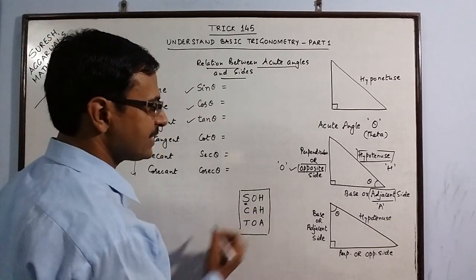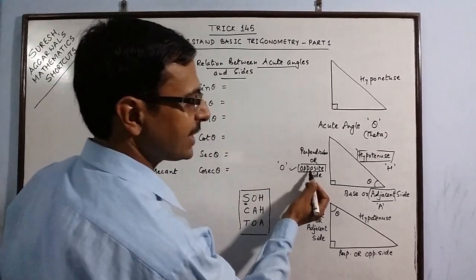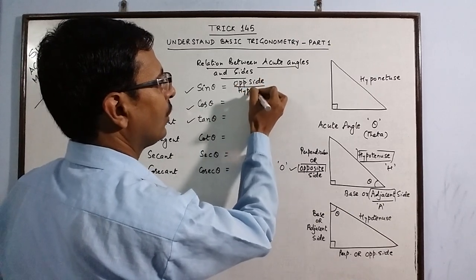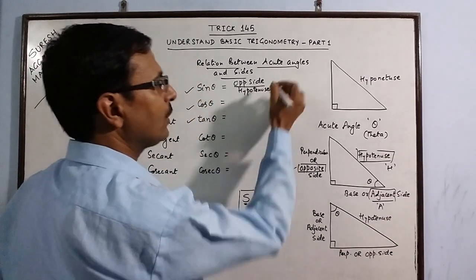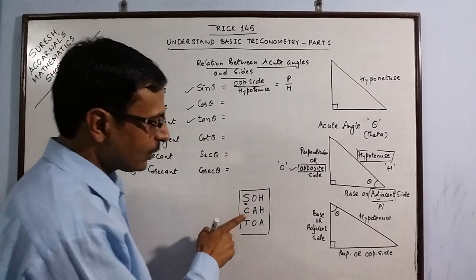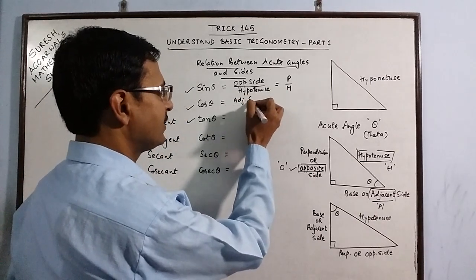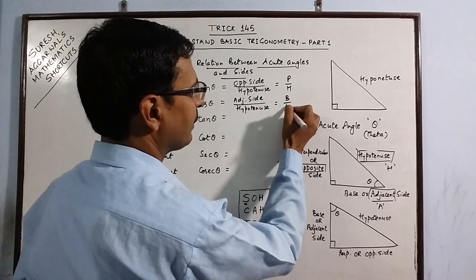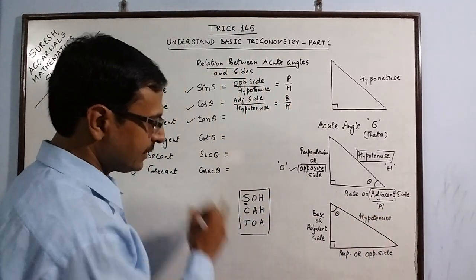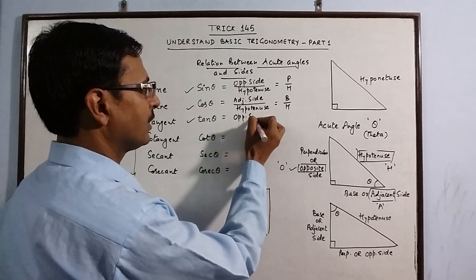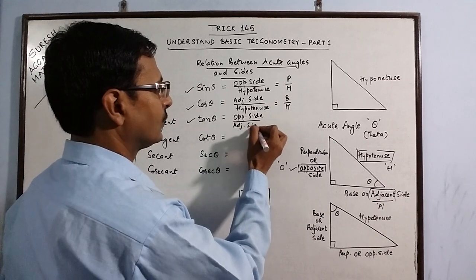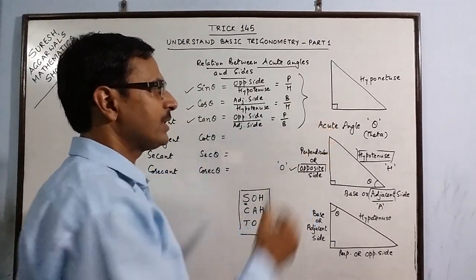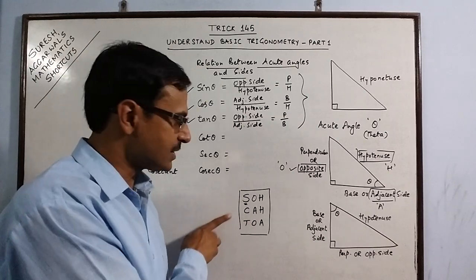So sin theta is the ratio of opposite side to hypotenuse, or perpendicular upon hypotenuse. Cos theta is the ratio of adjacent side to hypotenuse, or base upon hypotenuse. Tan theta is opposite side upon adjacent side, or perpendicular upon base. Having understood these three formulas using the acronym SOH-CAH-TOA, we can now write the other three formulas.